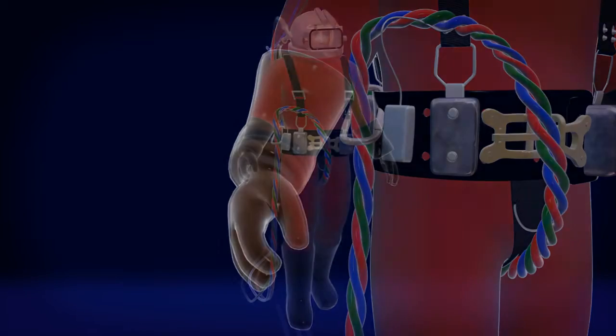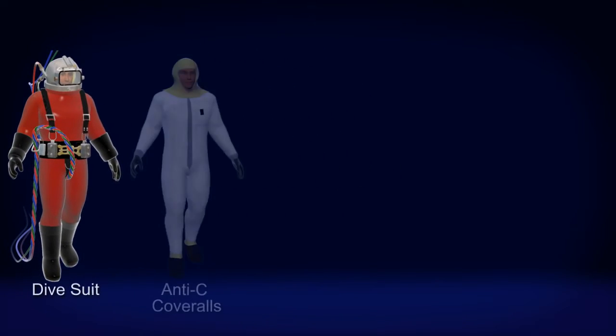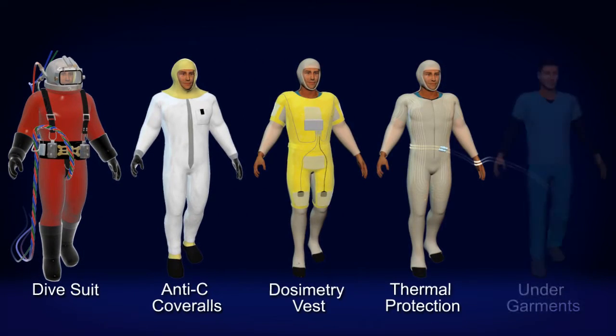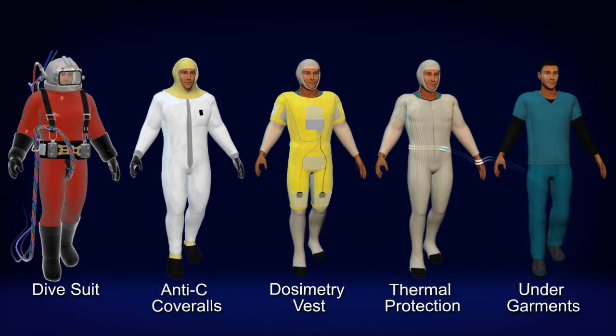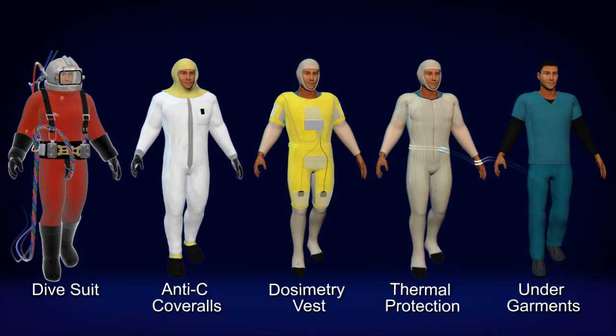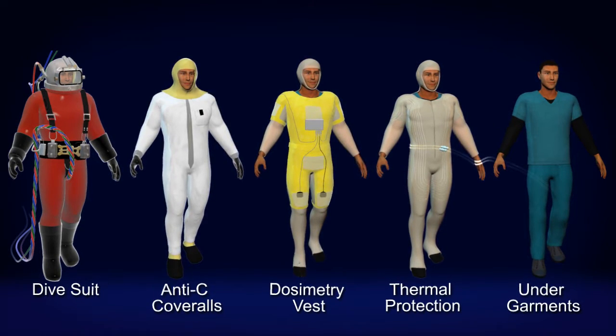The suit is pressurized to keep water out. Under the suit, the diver wears the same protective clothing worn by all other radiation workers. In the unlikely event of a suit leak, the anti-contamination clothing would prevent direct skin contamination.